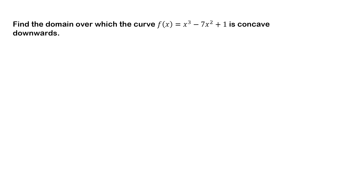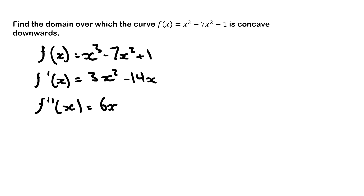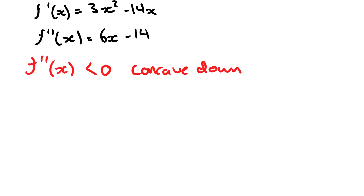Here's another problem: find the domain over which the curve x cubed minus 7x squared plus 1 is concave downwards. We do the same thing — write out your function, find the first derivative, find the second derivative. This time we know that the second derivative needs to be less than zero for concave downwards, so 6x minus 14 must be less than zero, and we solve it as a normal inequality.